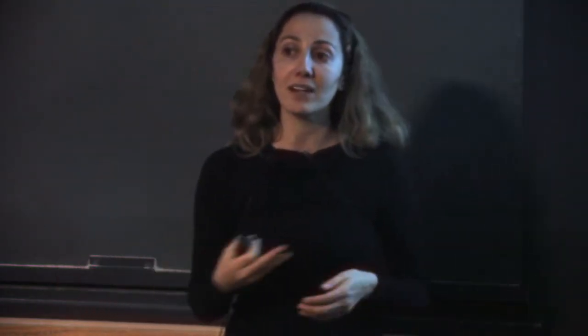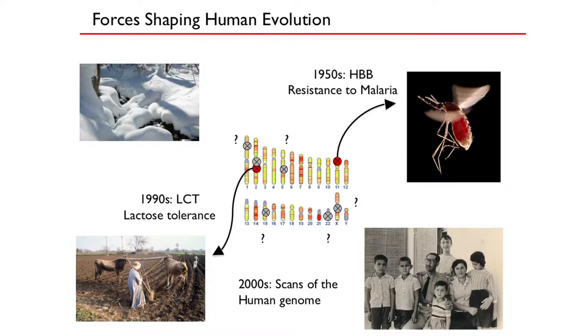That was really the first example. Since that time, the evidence started flooding in that sickle cell anemia, thalassemia, ovalocytosis, and G6PD deficiency were all indeed protecting from malaria. We can think of many other forces that would drive evolution: other infectious diseases, changes in climate and temperature, domestication of plants and animals, changes in diet, and the constant need to reproduce. There are many different forces we might think of, but very few examples that actually exist.